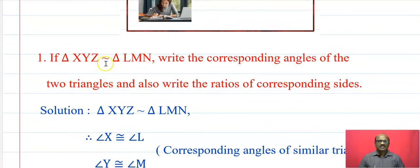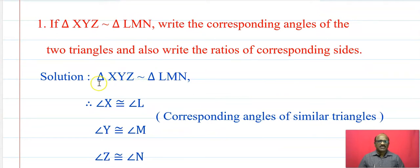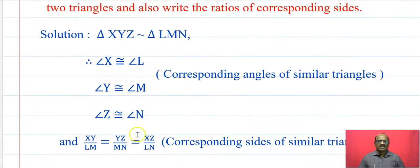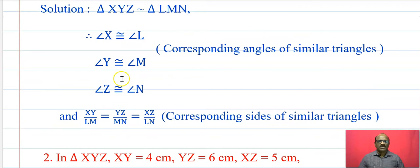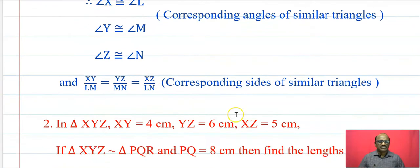Practice set 3.5. Question 1: If triangle XYZ is similar to triangle LMN, write the corresponding angles of the two triangles and also write the ratio of corresponding sides. Since triangle XYZ is similar to triangle LMN, angle X is congruent to angle L, angle Y is congruent to angle M, angle Z is congruent to angle N, and the corresponding sides in proportion are XY upon LM, YZ upon MN, and XZ upon LN.